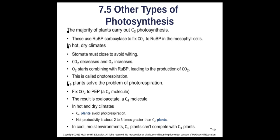The majority of plants do C3 photosynthesis — they use RuBP to fix carbon dioxide, all happening in the mesophyll green leaf tissue. But not all plants live in places sunny and moist enough for this. In hot, dry climates, the stomata — the openings under the leaf letting CO2 in and O2 out — must close so the plant doesn't dry out in midday. This means CO2 decreases while the plant does photosynthesis and oxygen increases. Oxygen then combines with RuBP, making more CO2 in the plant — a process called photorespiration.